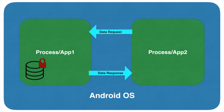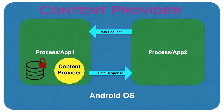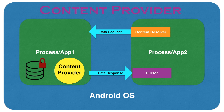Now the obvious question is how to make sure that App1 exposes its data in a secure manner. That is where a new component comes into picture called Content Provider. App2 will use an API called Content Resolver, using which it will hit App1's database or data. Content Provider defined in App1 will respond back using a format called Cursor.